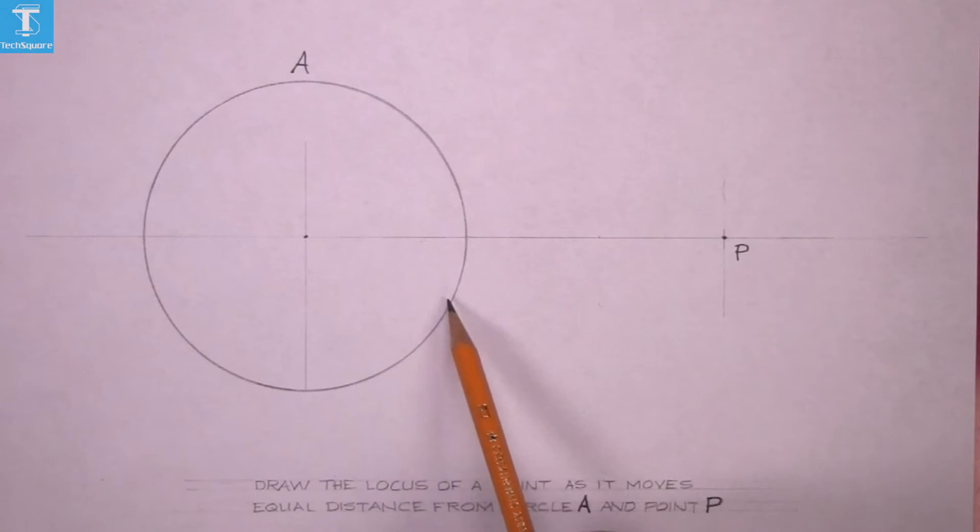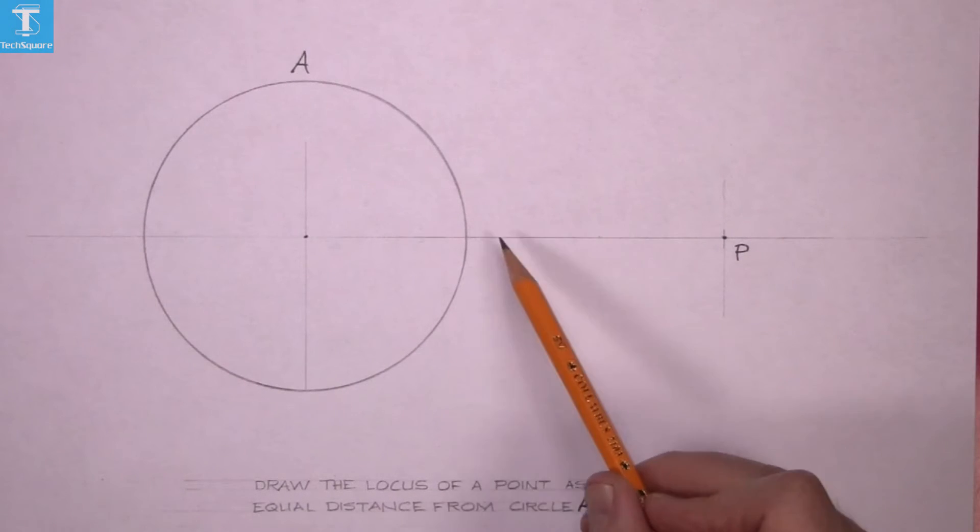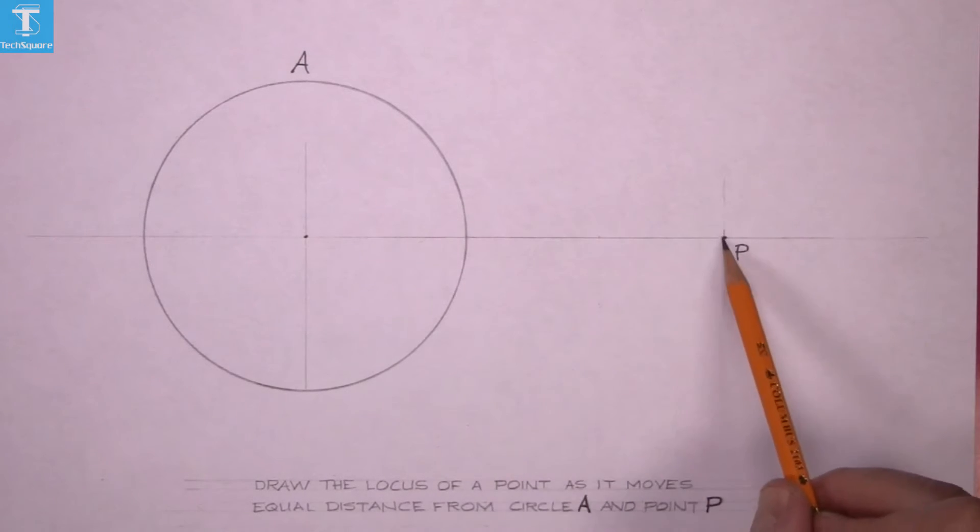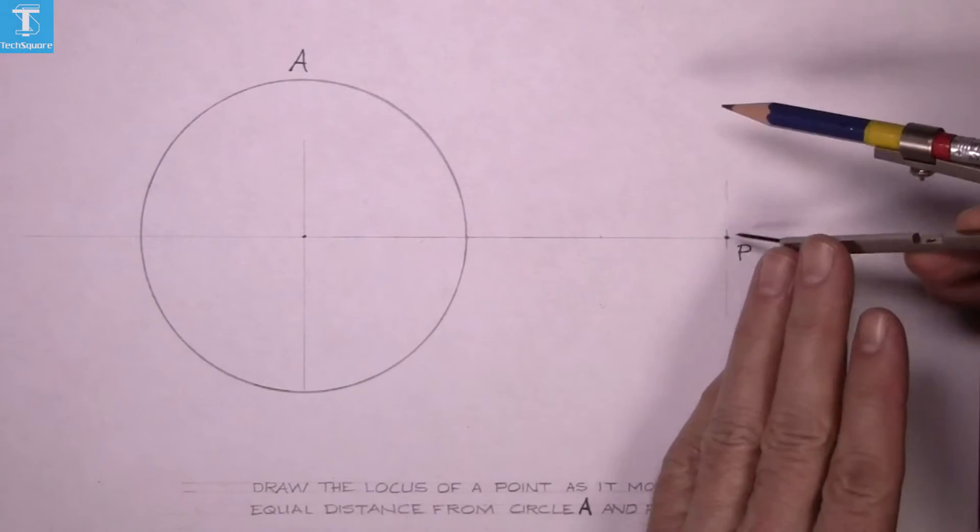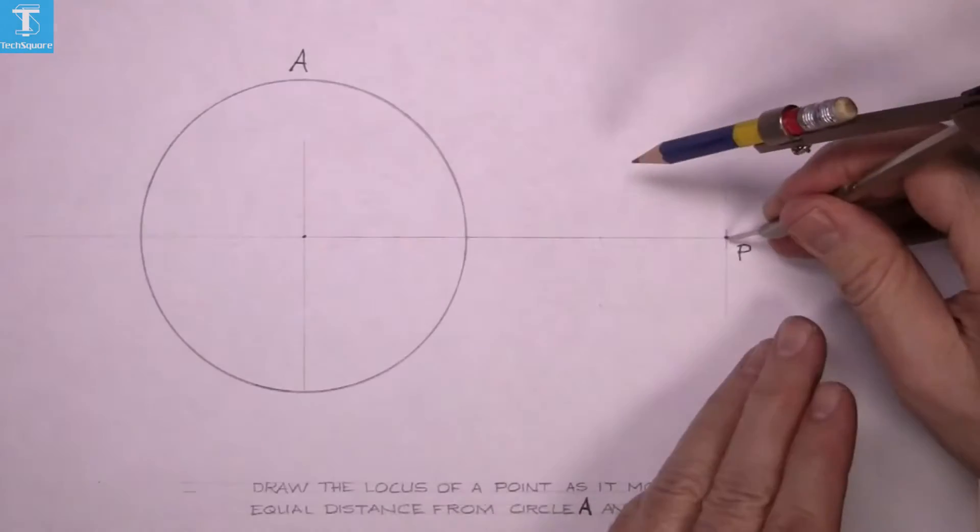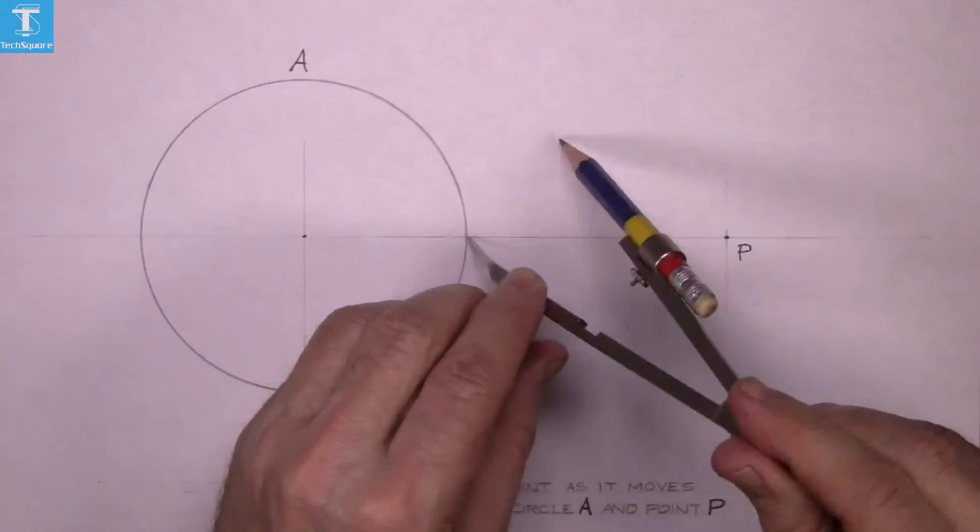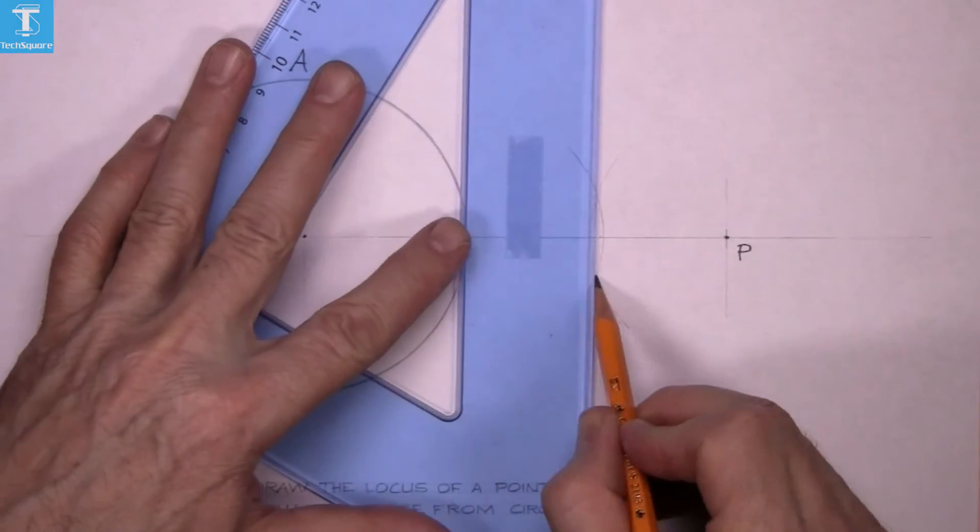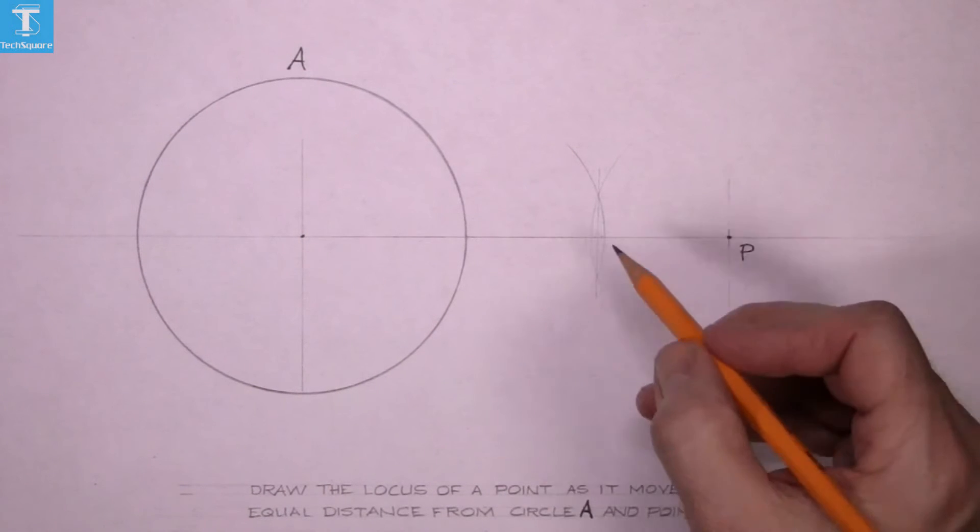So from this point here to P we have to get the midpoint. So get the center point between there and there. Now we're bisecting that distance. Join the two points and that's your midpoint there.